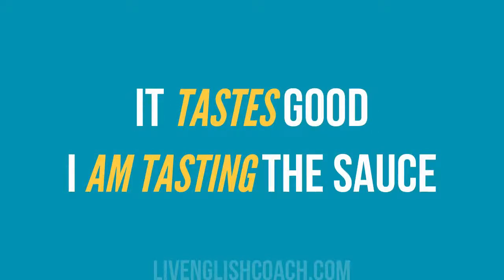It tastes good — что-то хорошо на вкус. Here the verb expresses our perception of taste, so it's stative. But in the following case: I am tasting the sauce — я его пробую — the verb taste becomes an active dynamic verb. It expresses the action of tasting. We can picture it: taking a spoon and trying something. I am tasting the sauce. Since the verb becomes dynamic, using it in continuous aspect is correct.